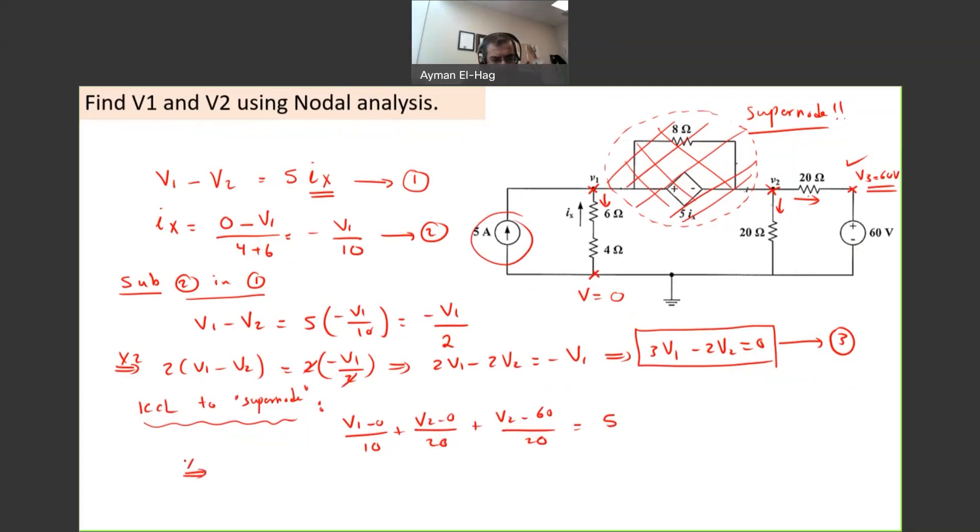I will multiply the whole equation by 20, the least common denominator. So we'll have 20 times V1 divided by 10 plus 20 times V2 divided by 20 minus 20 times 60 divided by 20 equal to 20 times 5. This will cancel. This becomes 2, so we have 2V1. We have V2 and another V2, so it's plus 2V2 equal to 100. And this is my equation number 4.